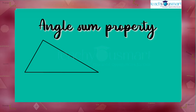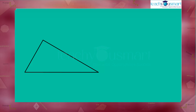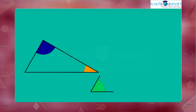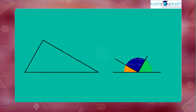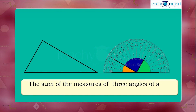Now let's learn an interesting concept of triangles — the angle sum property. From this illustration, let's find the sum of interior angles of a triangle. The sum of the measures of the three angles of a triangle is 180 degrees.